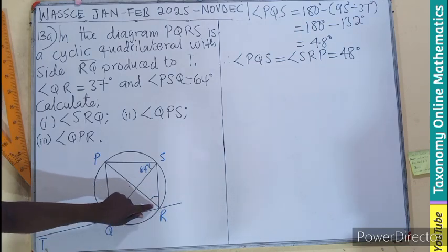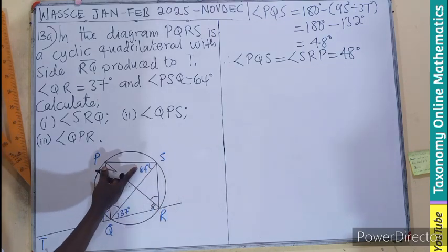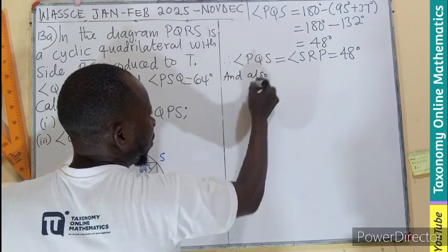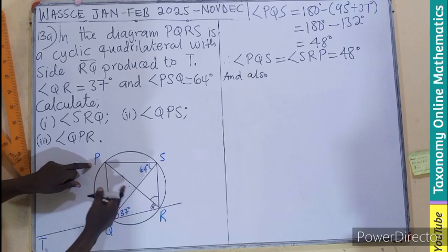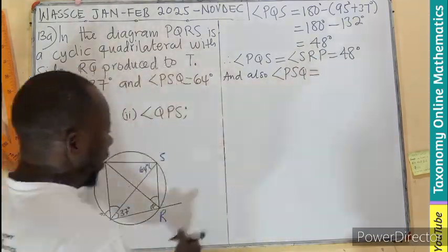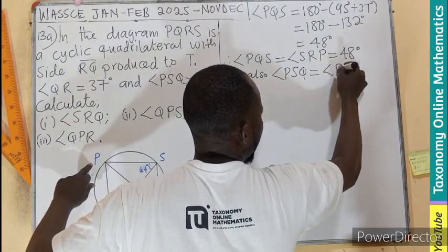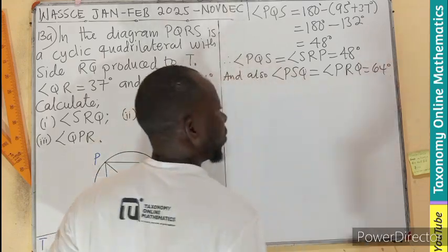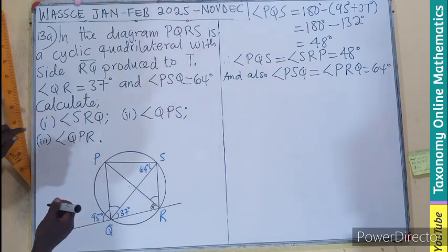But we're not looking for this alone. We need this angle here. We are having angle PSQ, and angle PSQ is the same as angle PRQ, which equals 64°.